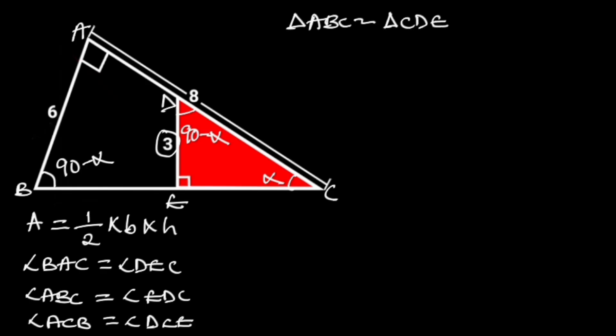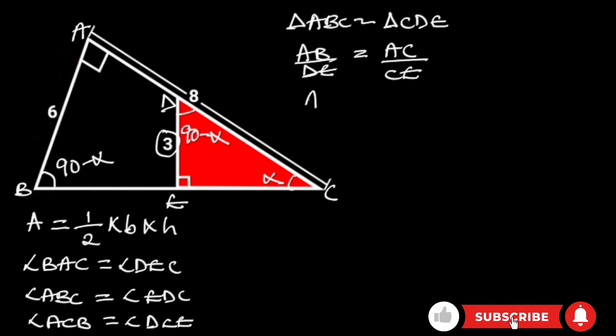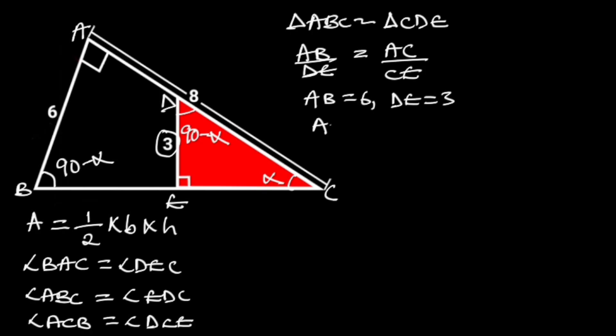And the proportionality of their corresponding sides is AB over DE is equal to AC over CE. AB is equal to 6, DE is 3, and AC is 8.